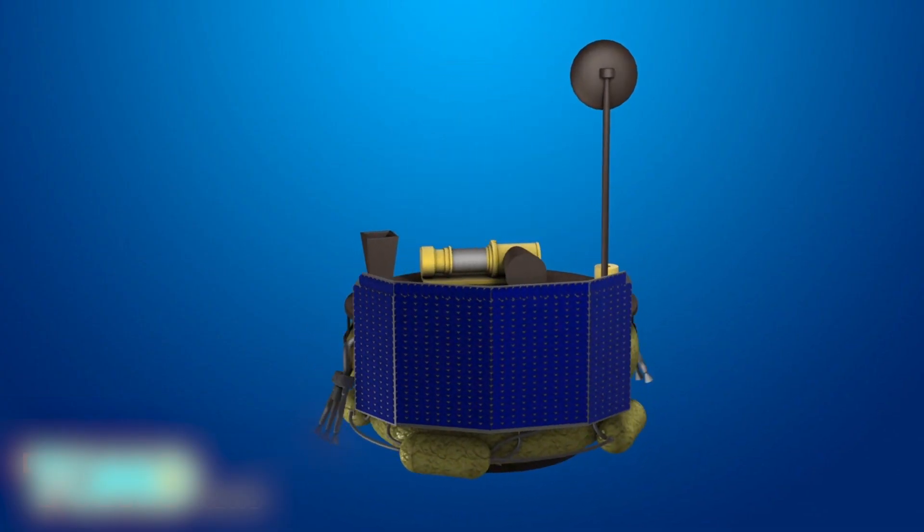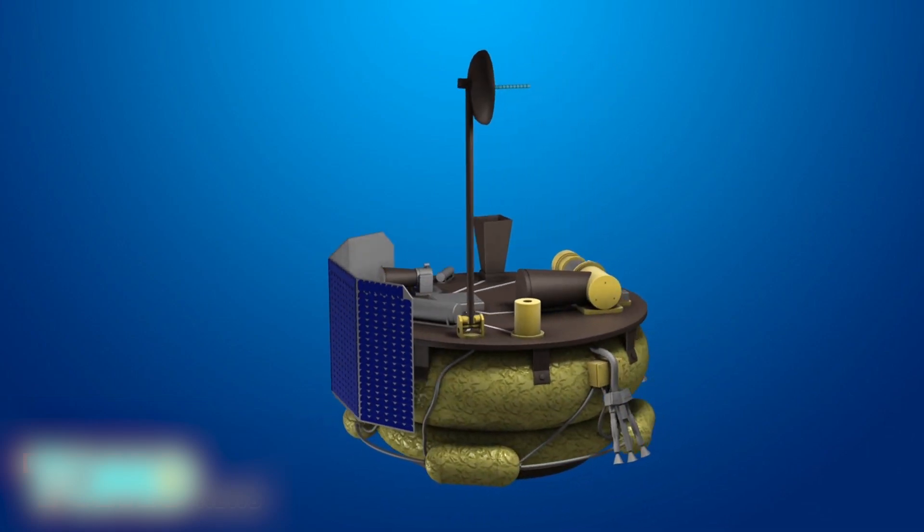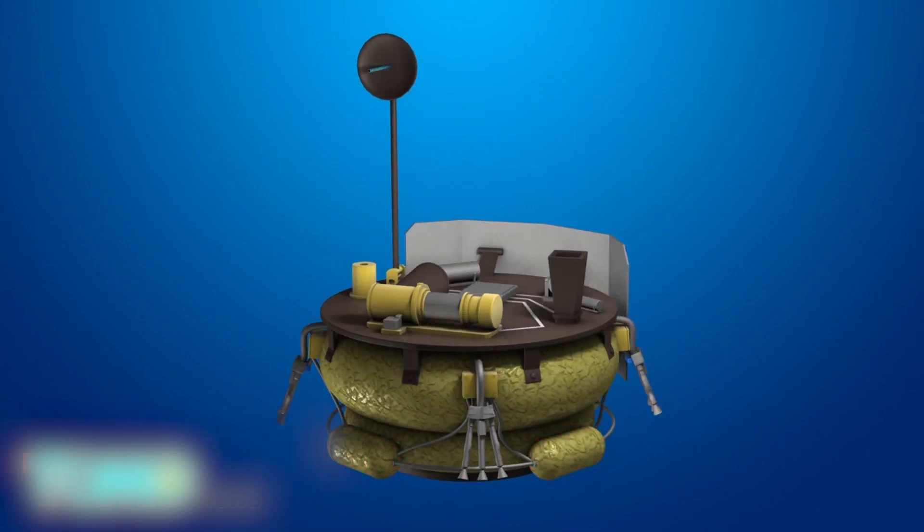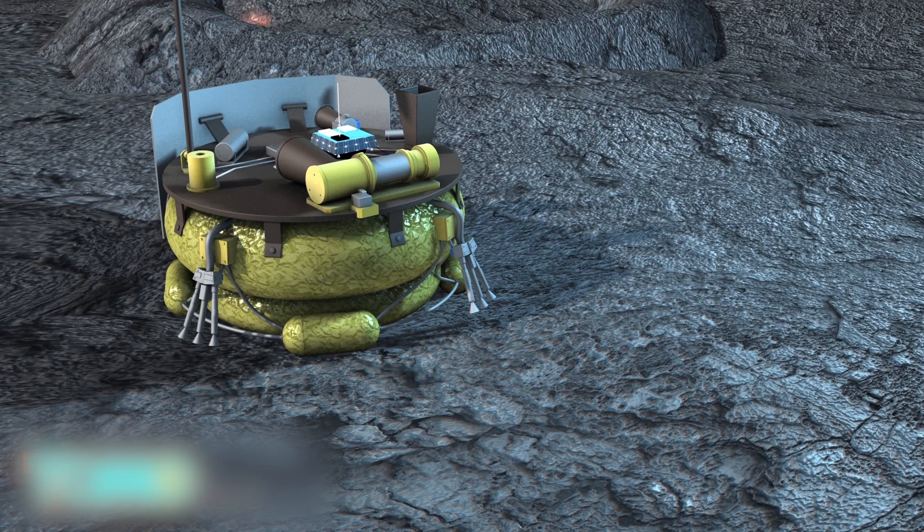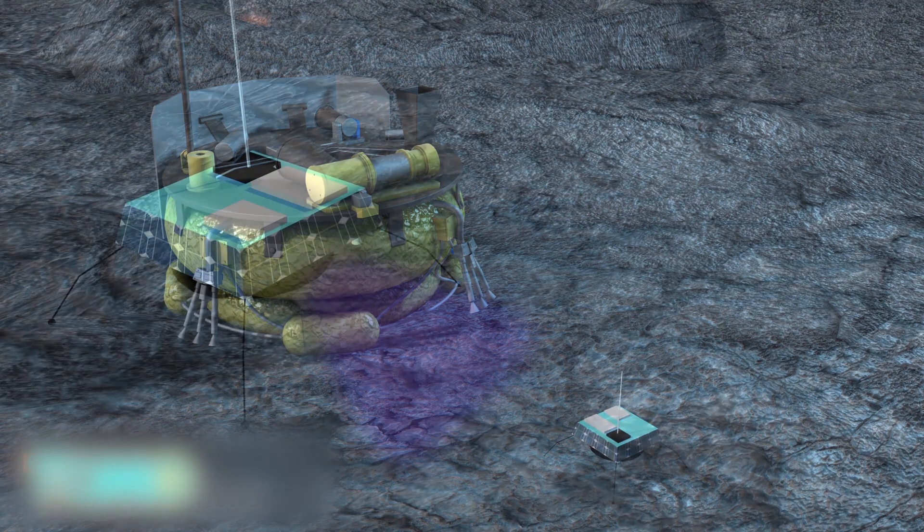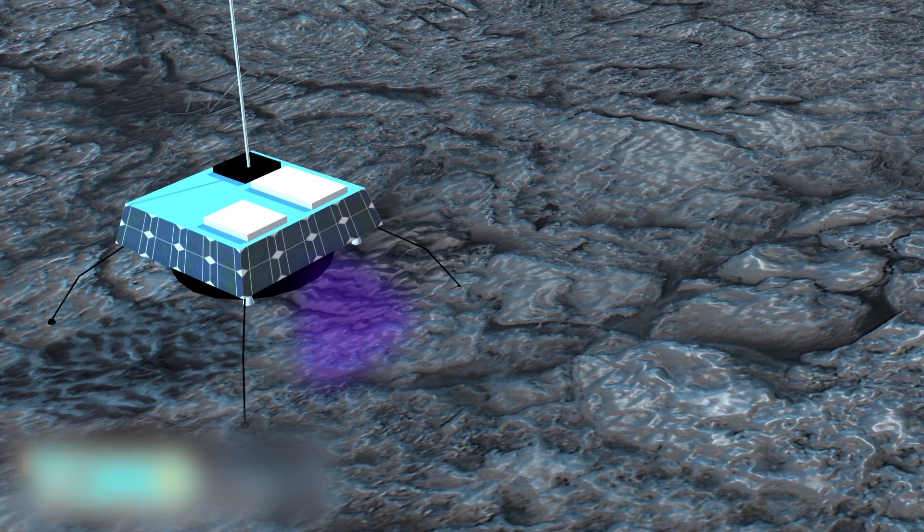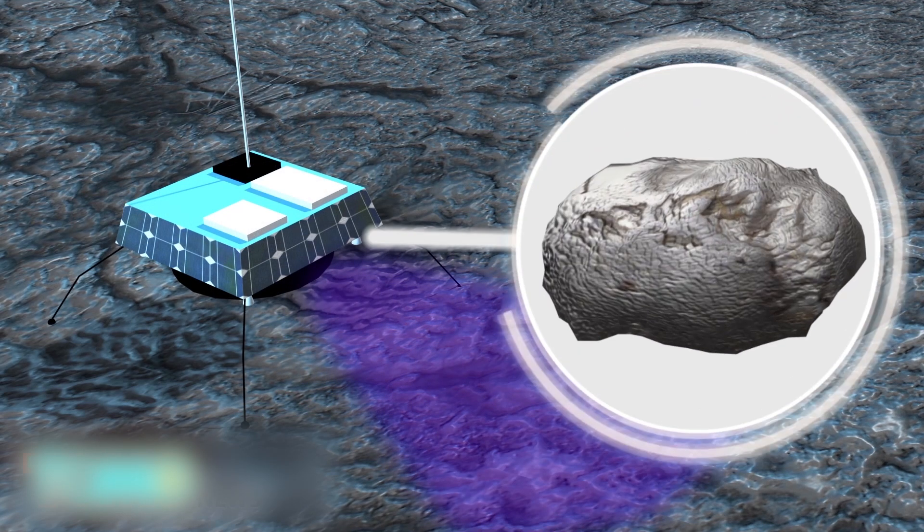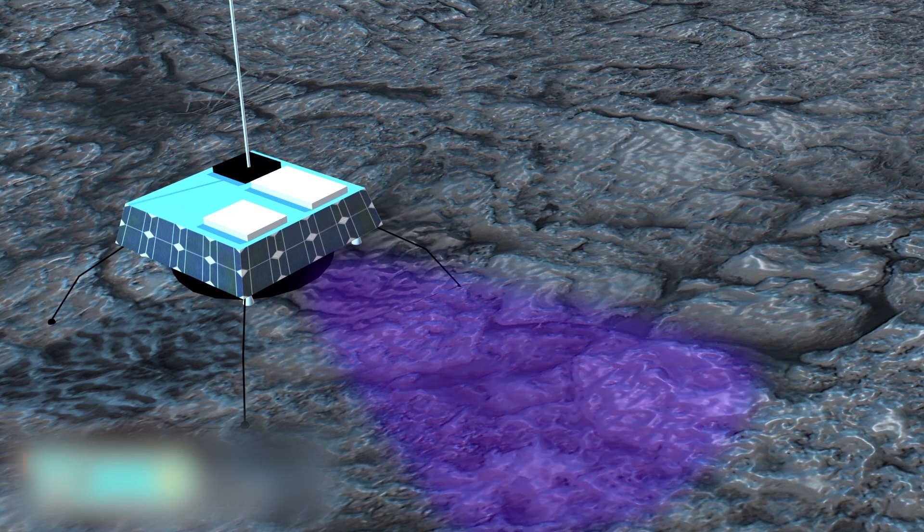Moon Express' MX-1 Lander consists of a solar panel, pressure tanks, and a payload deck. The small vehicle would deliver scientific hardware to the moon's surface. Moon Express is hoping to find and mine lunar resources, including platinum, titanium, and the rare isotope helium-3.